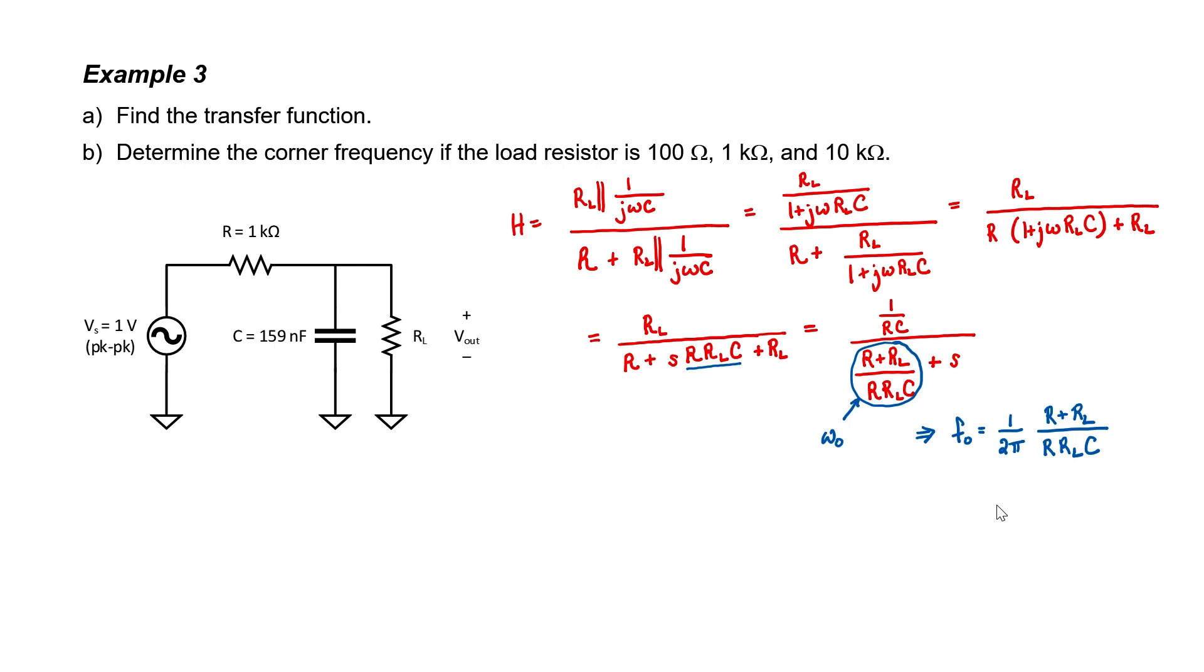All I need to do to answer question B is to substitute in three different values for our load resistor to see how the corner frequency is affected. Let's make a small chart. If our load resistor is 100 ohms, the corner frequency is 11 kilohertz. If it's a kilo-ohm, we get 2 kilohertz. If it's 10 kilo-ohms, we get 1.1 kilohertz. You might recall from the previous problem that if we have an infinite load resistor or no load resistor at all, then our corner frequency was designed to be 1 kilohertz.